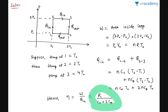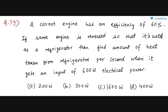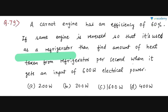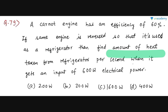Now let's do a question on Carnot engine and refrigeration. For the past 4 to 5 years, every year at least one question from Carnot engine or refrigeration has appeared in NEET, so learn this well. The question says a Carnot engine has efficiency 60%. The same engine is reversed to work as a refrigerator, with 600 W of electrical power input. How much heat does the refrigerator extract from inside?